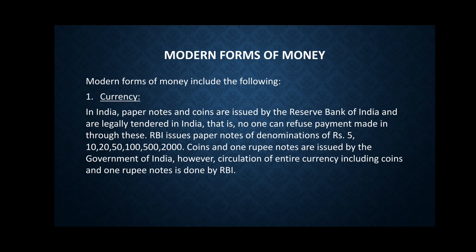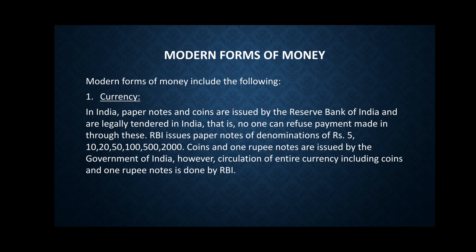The next topic is modern forms of money. The first modern form is currency. In India, paper notes and coins are issued by the Reserve Bank of India and are legally tendered — meaning no one can refuse payment made through these. RBI issues paper notes of denominations of rupees 5, 10, 20, 50, 100, 500, and 2000. Coins of rupees 1 and 1 rupee notes are issued by the Government of India. However, circulation of the entire currency including coins and 1 rupee note is done by RBI. Currency is what we call cash.